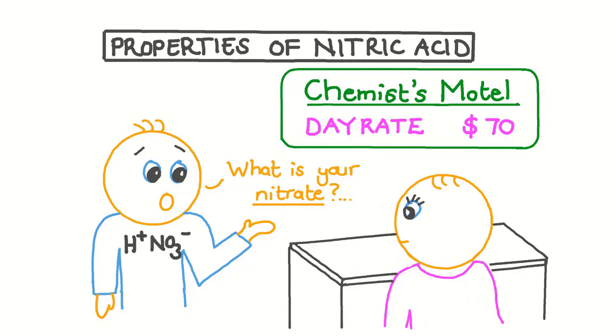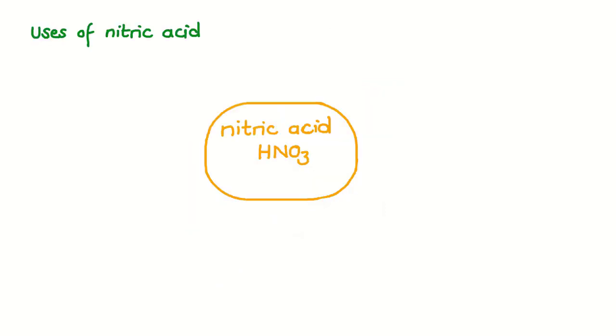In this video we will investigate nitric acid, how it is made in the lab, its physical and chemical properties and some of its reactions, as well as its uses. Let's start by having a look at some of the commercial and industrial applications and uses of nitric acid. Nitric acid, or HNO3, is a highly useful and common starting substance for many products in industry.